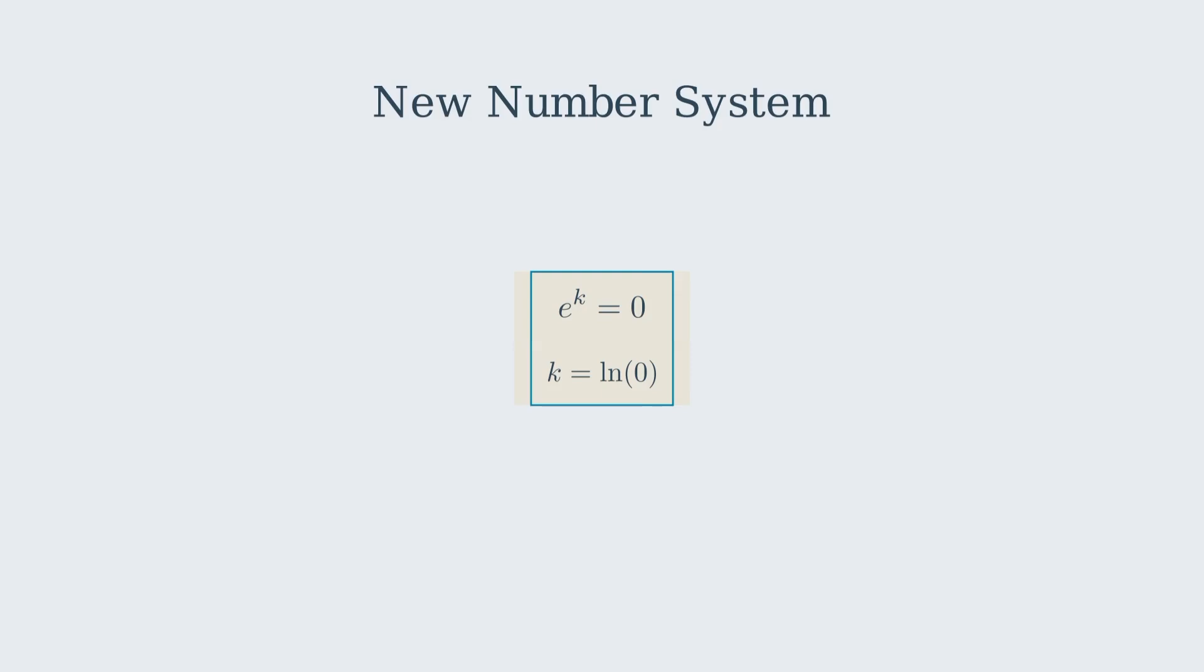which means k is like the natural log of 0. We define it further: e to the n k equals 0 to the n, where n is any real number. If n is positive, e to the n k equals 0. If n is negative, it's 1 over 0, which is undefined in standard math. And if n equals 0, we get e to the 0 k equals 0 to the 0, which is a bit tricky. Let's say it's 1 for now.